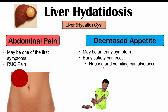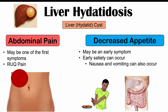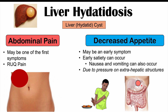Why might these signs and symptoms be occurring? The stomach is adjacent to the liver, and depending on where the cyst is located, if the cyst is in a portion of the liver closer to the stomach and starts to grow and expand, it can start to impinge or push on the stomach. So decreased appetite, early satiety, and nausea and vomiting can be due to pressure on extrahepatic structures — structures outside of the liver, such as the stomach.